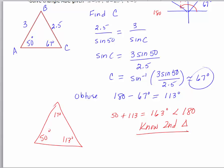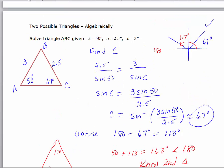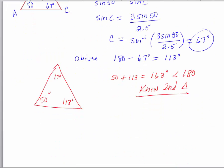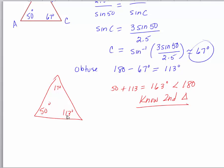So algebraically, to recap: when you have side-side-angle and you get an answer without an error, you use that acute angle — there's at least one triangle. To find out if there's a second triangle, always find the obtuse angle anyway, then decide if you can use it. Find the obtuse angle — in this case 113 — add it to the original angle, and if that sum is less than 180, then there are enough degrees left over for a third angle, confirming a second triangle exists.